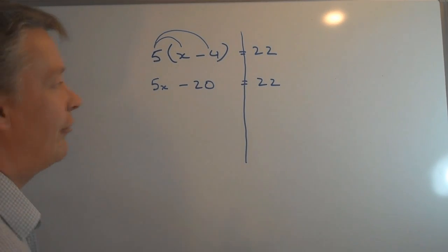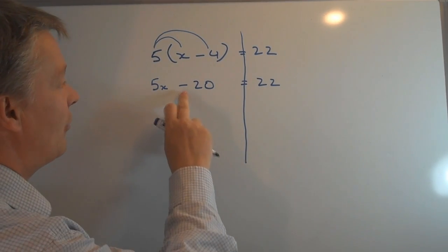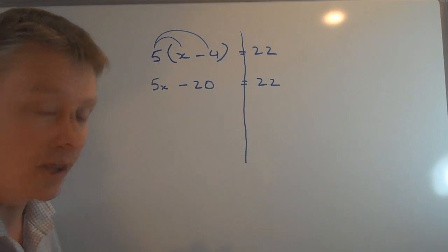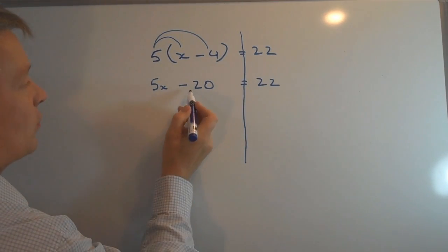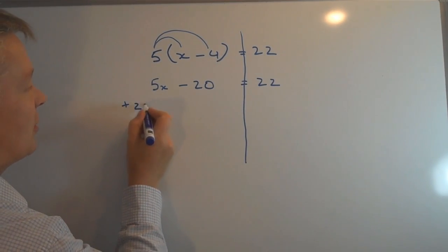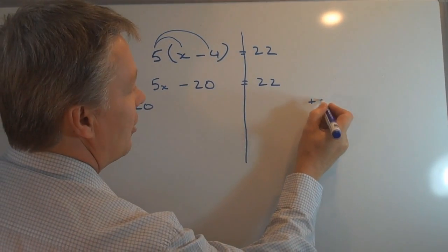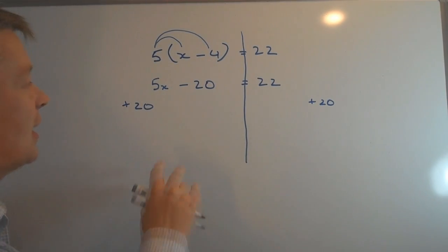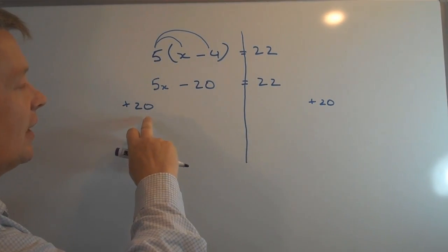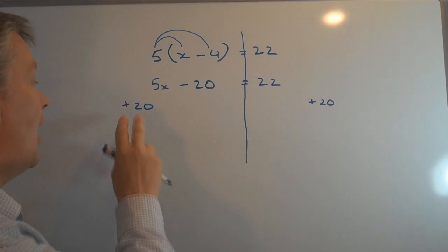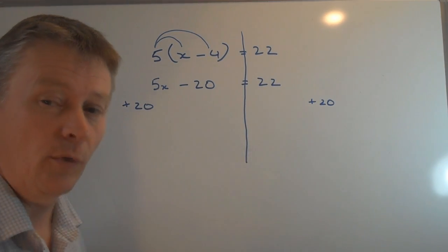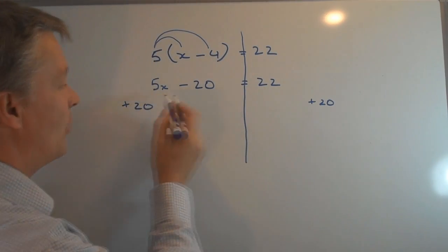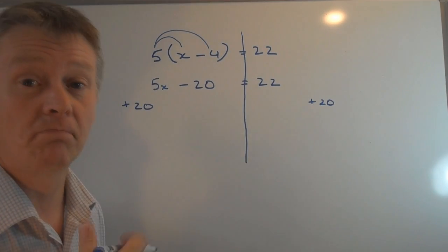Okay, now if you look at the first video, it talks about how we get rid of a minus number or a positive number on one side. And what we do is we cancel this out by adding 20 onto both sides of the equation. Okay, if I add 20 to this side, I've got minus 20 and positive 20.